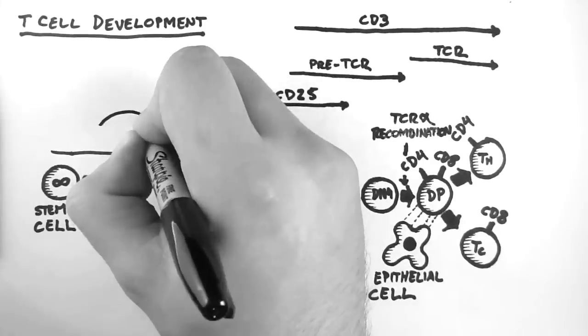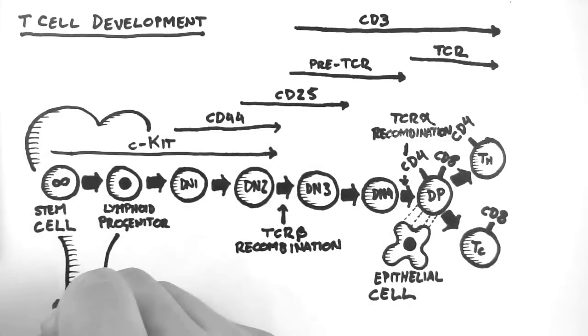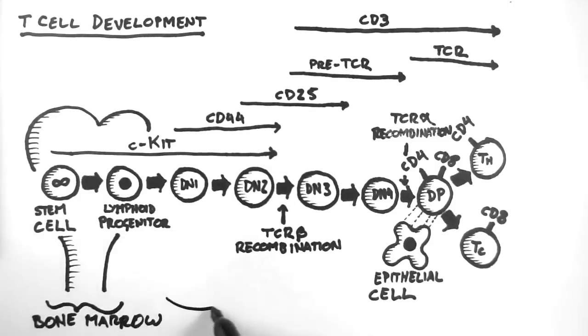Finally, let's have a look at where this all happens. The very first phases of this process occur within the bone marrow, at which point the cells then migrate to the thymus, which is an organ located in the very upper part of the thorax and can extend into the lower neck.